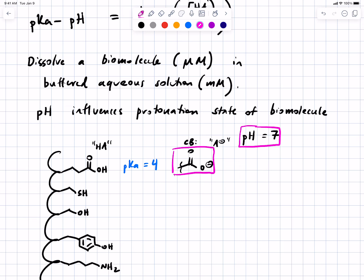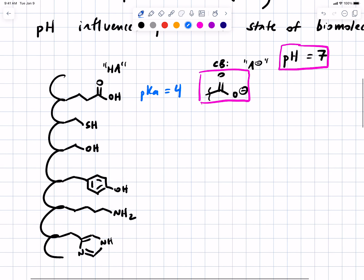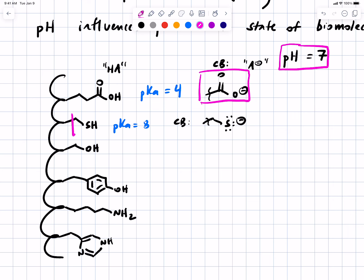Let's look at the next group, which happens to be a thiol. This has a pKa of 8. We can draw its conjugate base, which is the negatively charged thiolate. Which form dominates at pH 7? The neutral acid form.